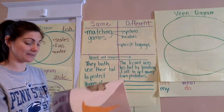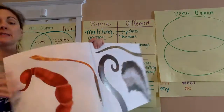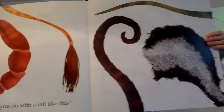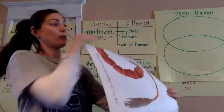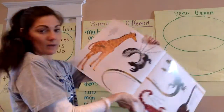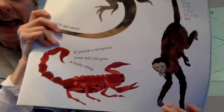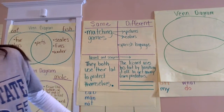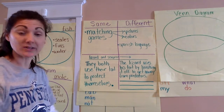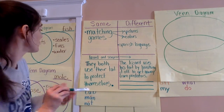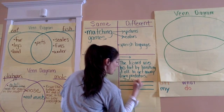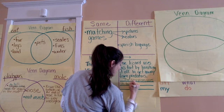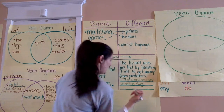I left it up to you to say how the scorpion protected itself. So I'm going to go back in the text and find the page that talks about the scorpion. Here it is — it said if you're a scorpion, your tail can give a nasty sting. So if you said that the scorpion uses its tail by stinging predators, that is correct. The scorpion uses its tail to sting predators.